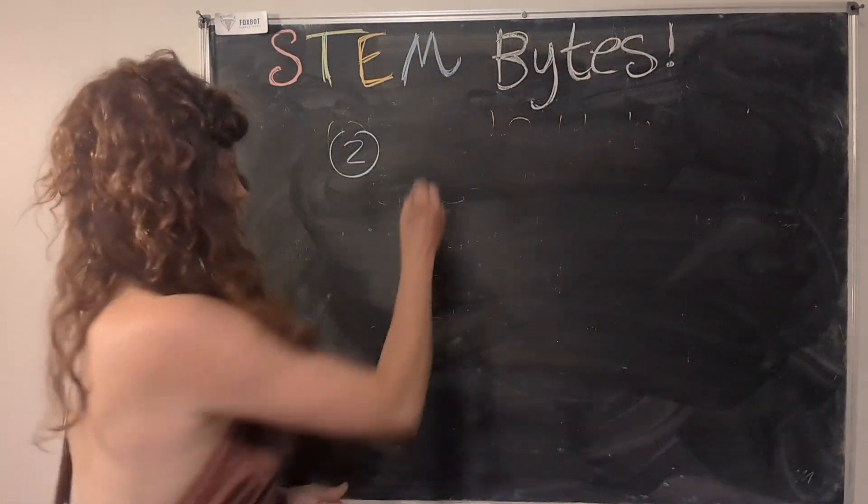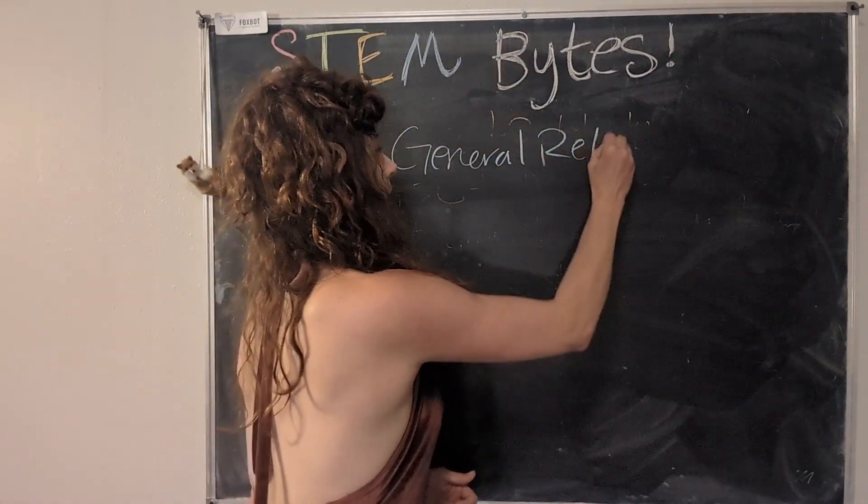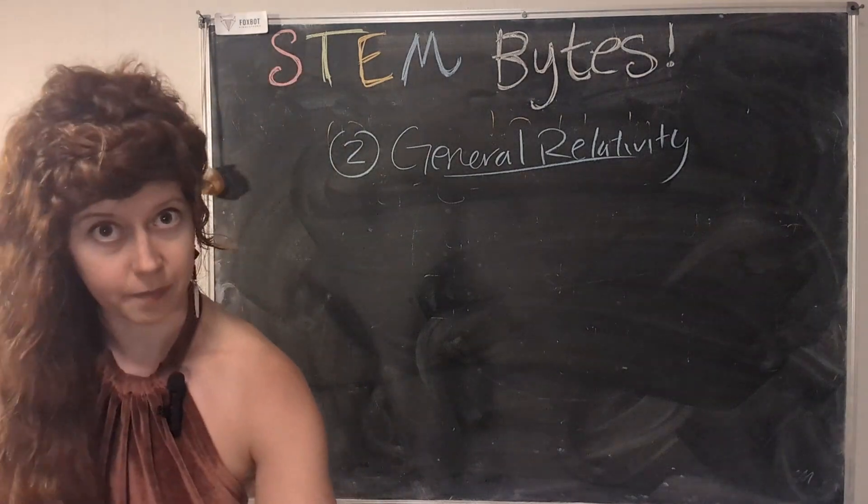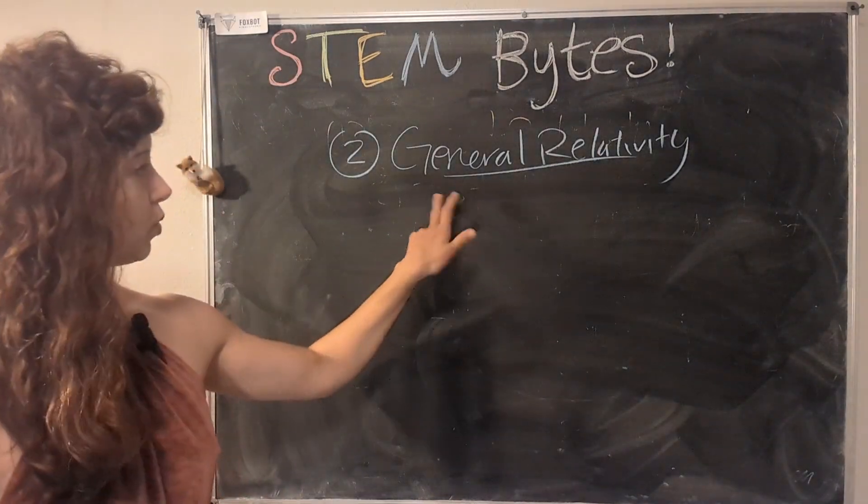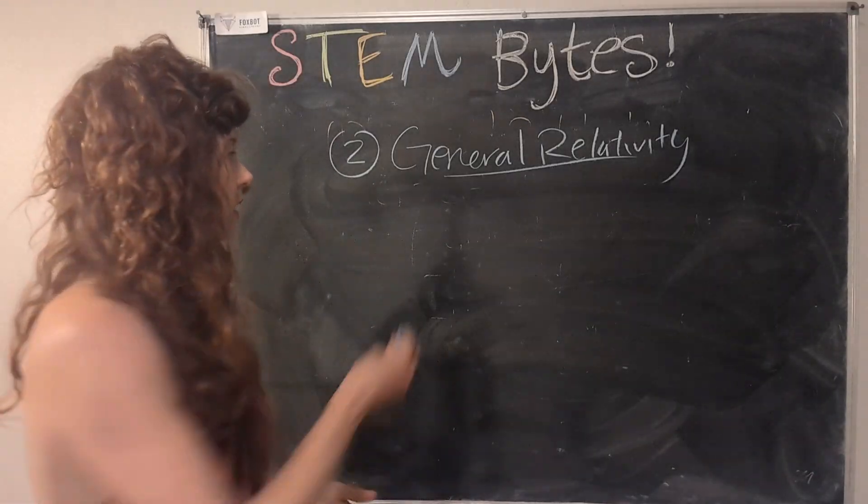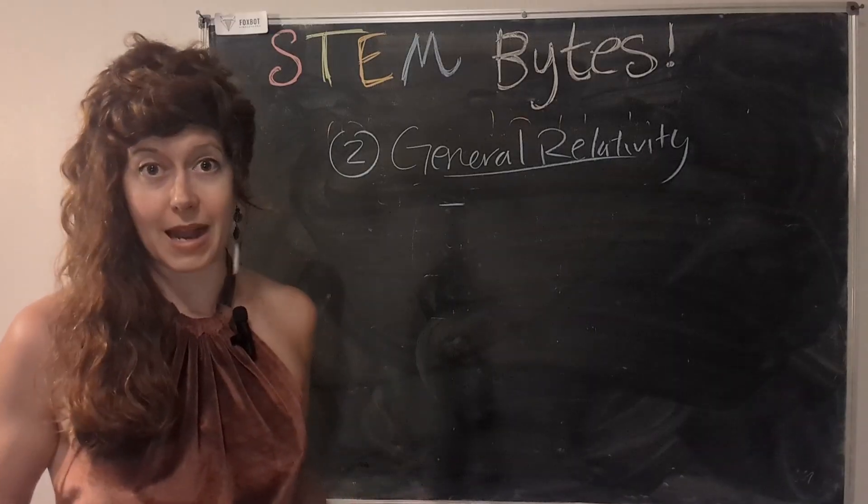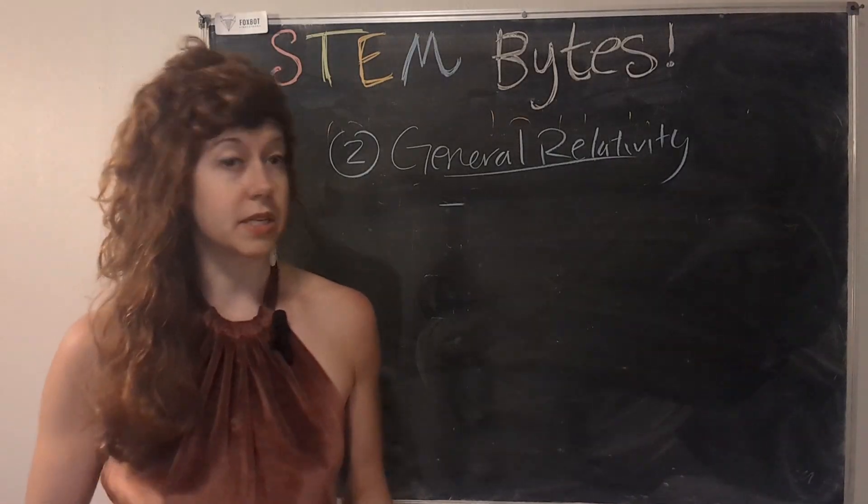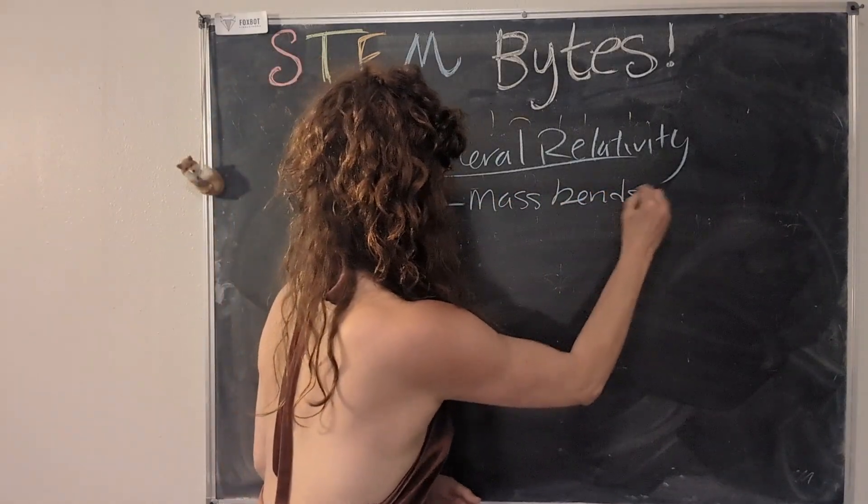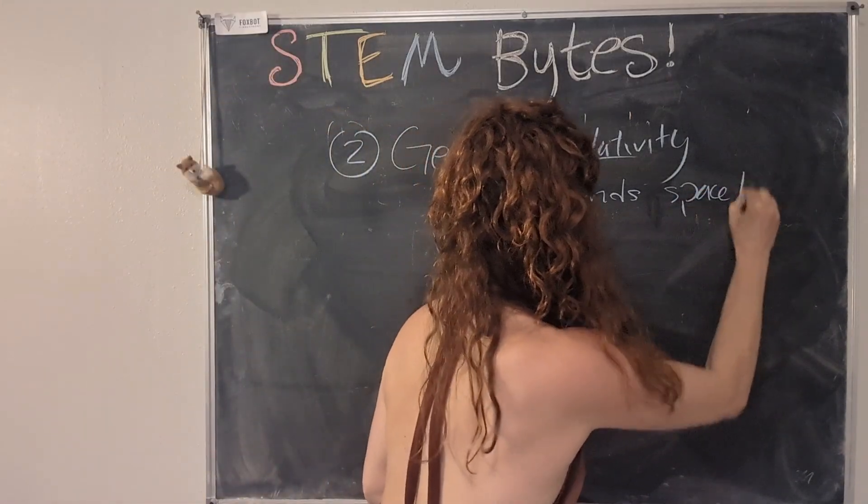So what about general relativity? General relativity is where a lot of the stuff about gravity comes into play. And so this is actually where Einstein kind of discovered or postulated, hypothesized, that gravity actually, objects with mass, they bend space-time. So mass bends space-time. So cool.